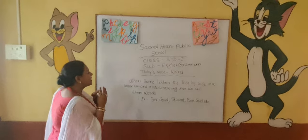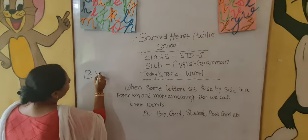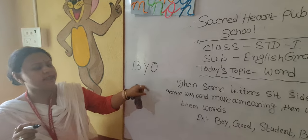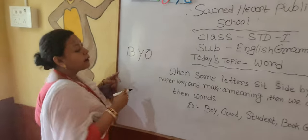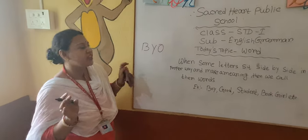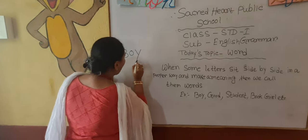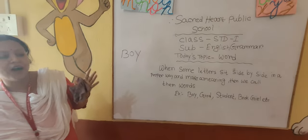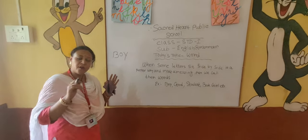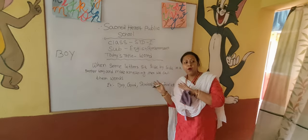When the letters sit side by side — let me show that: B, Y, O. B is a letter, Y is a letter, O is a letter. And they all sit side by side. But is this a word? No, this is not a word. But if I write it as B, O, Y, then it becomes a word. So we have to write the letters in a proper way, then it becomes a word.